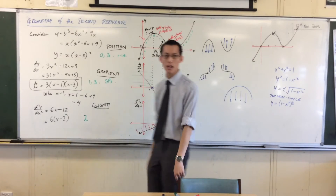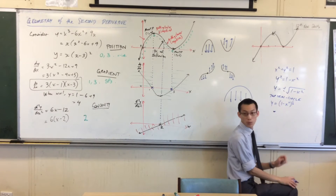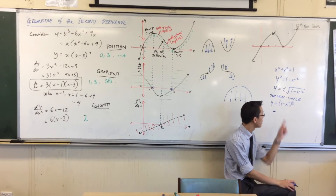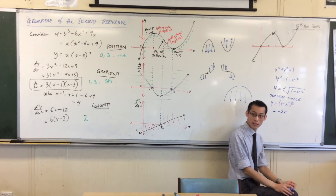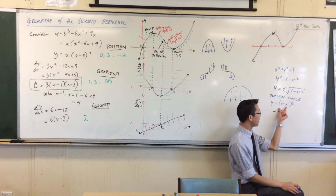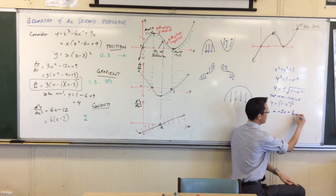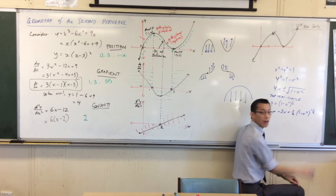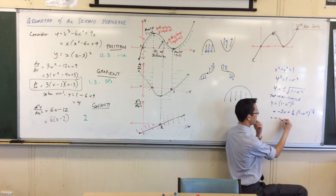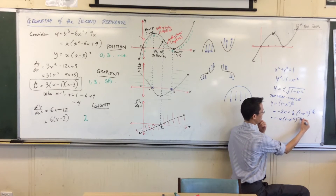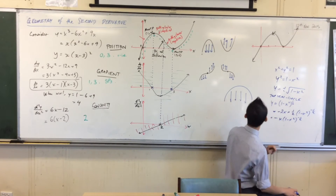I can differentiate this — I have the chain rule. The inside is 1 minus x squared, whose derivative is minus 2x. Then I do the outside: it's something to the power of a half, so I multiply by the power and reduce the power by one. Tidying up, I'll leave this in index form because I need to differentiate it again.